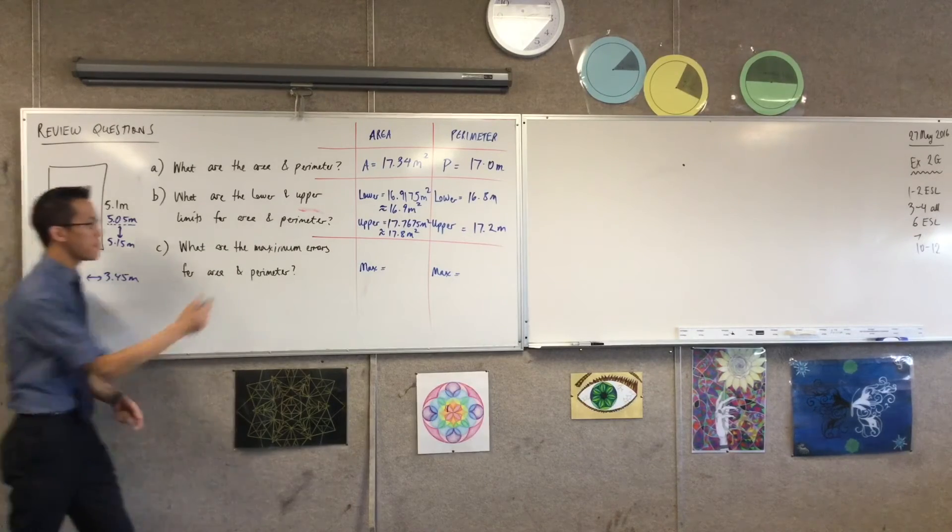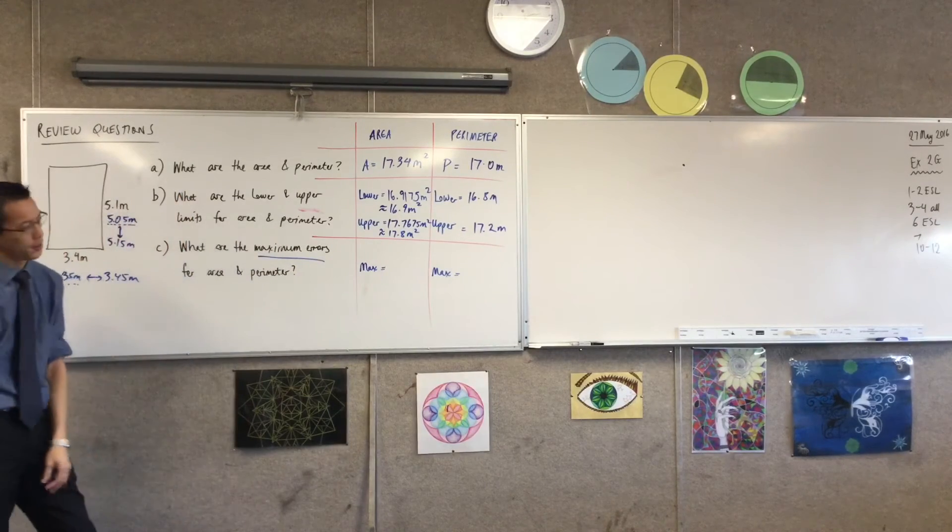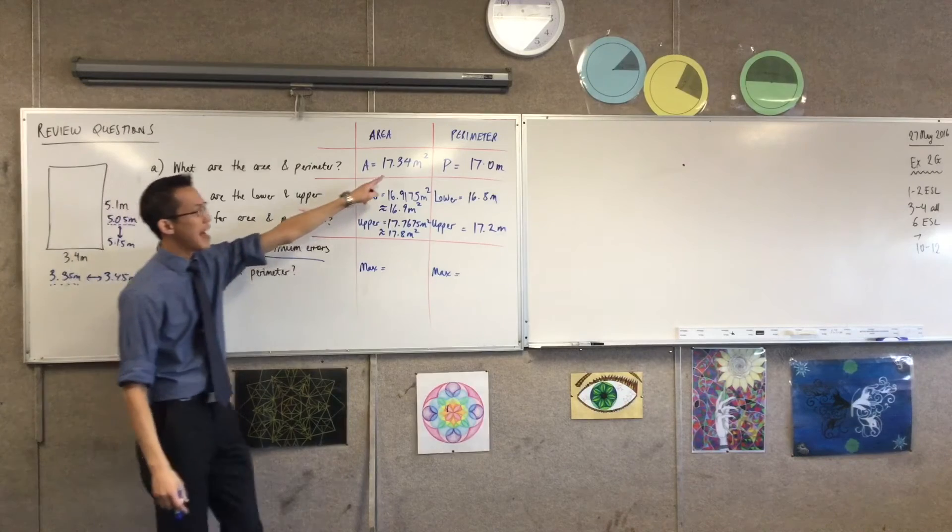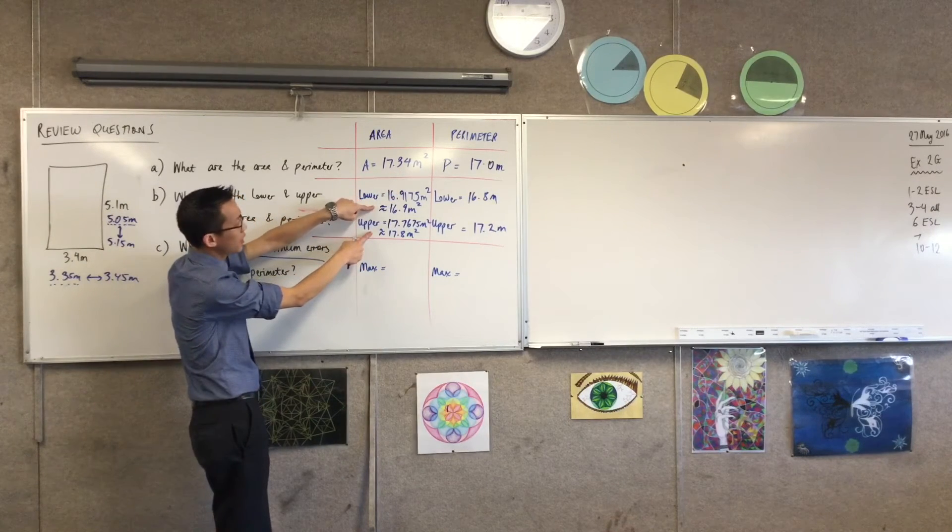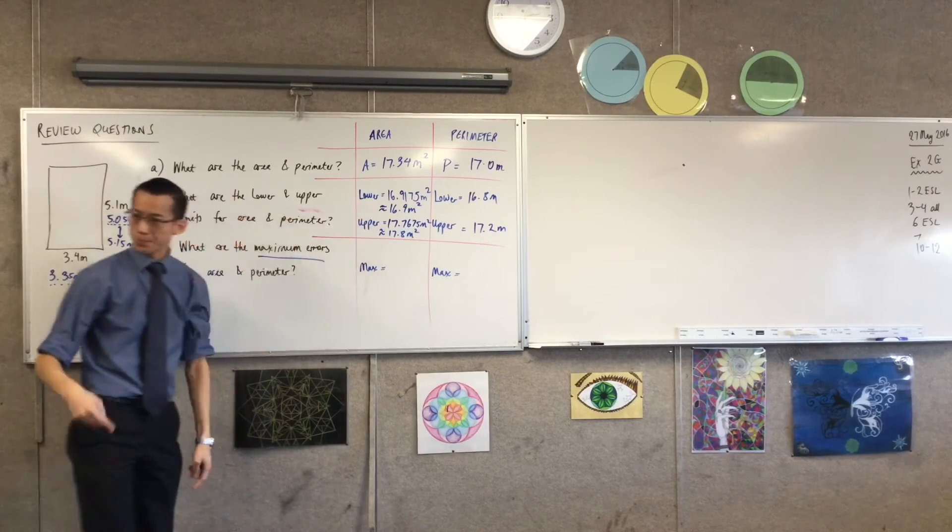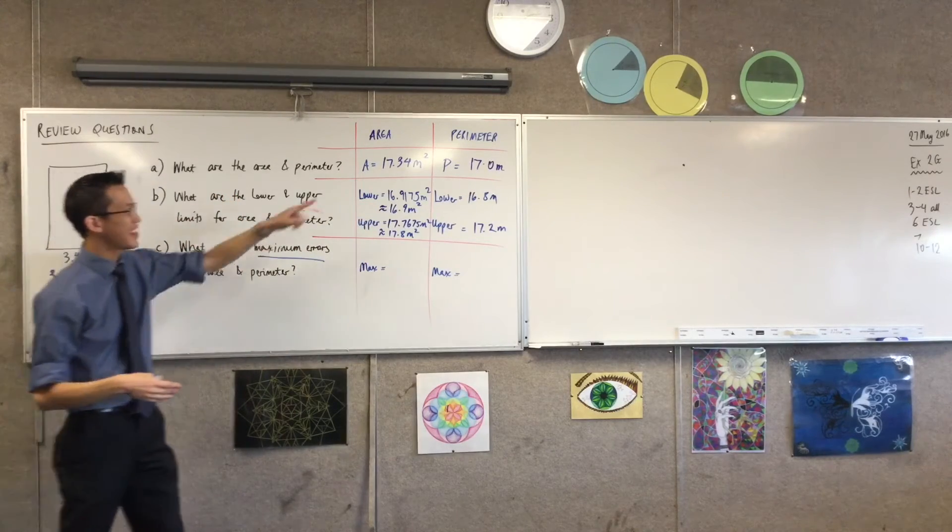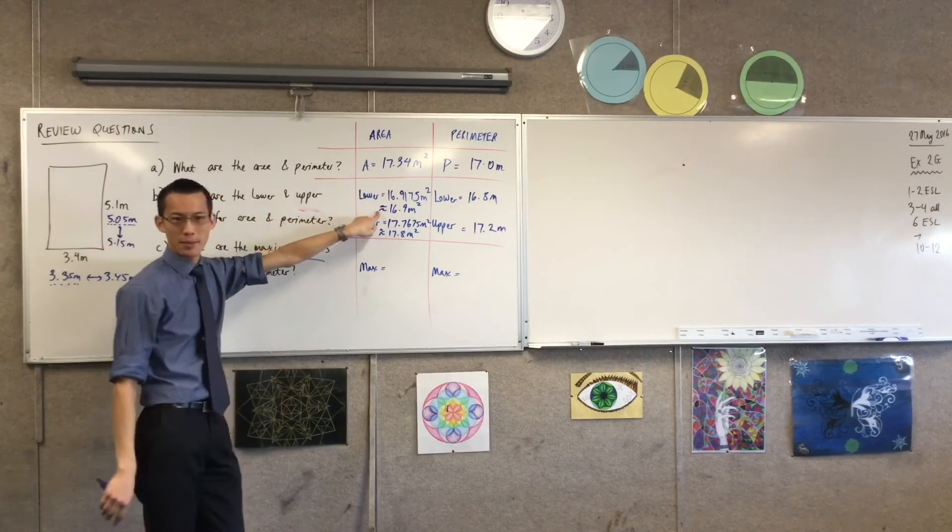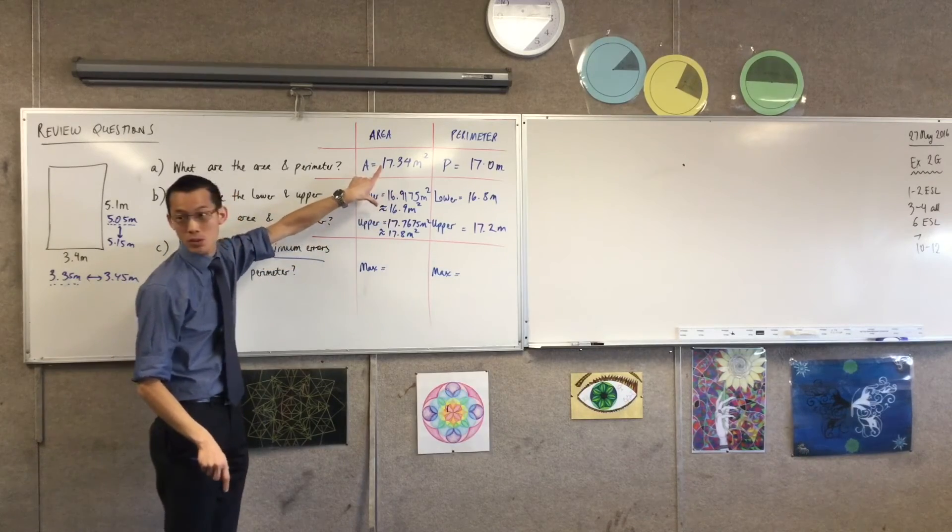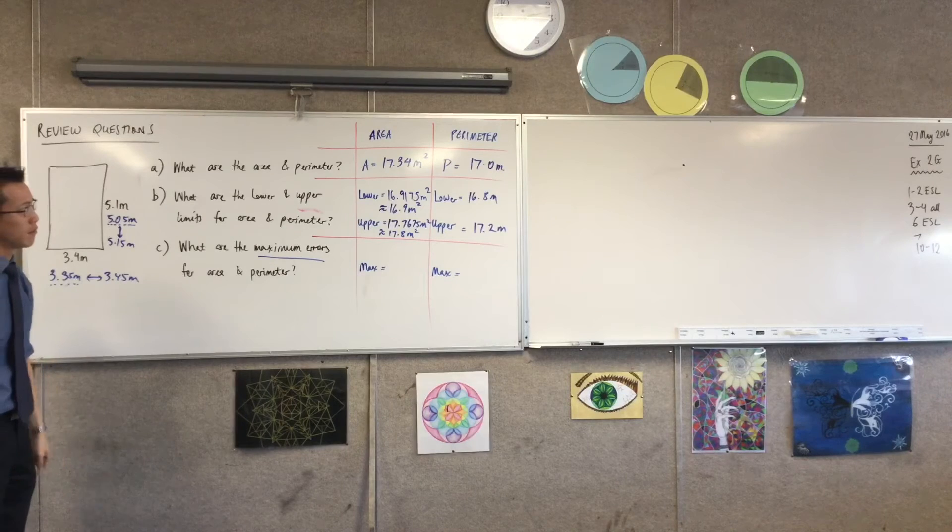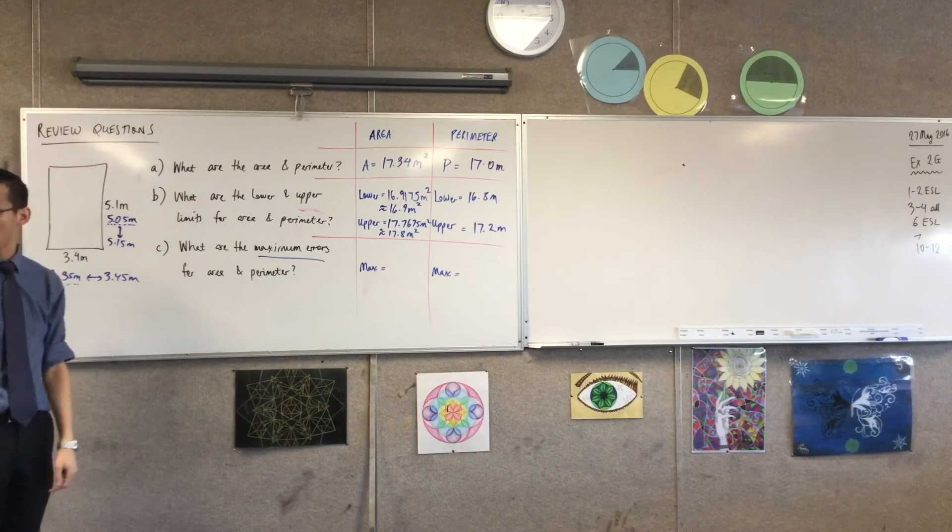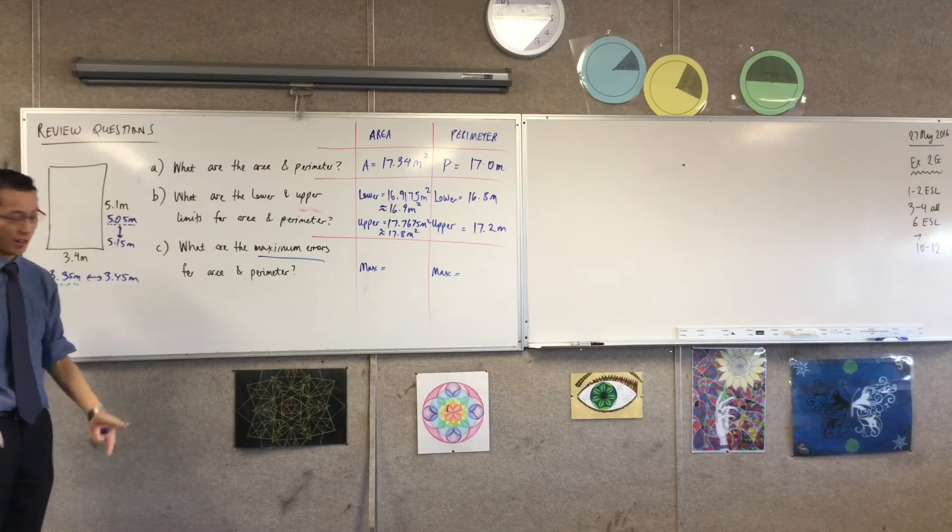Now, the last part. What are the maximum errors for each of them? So when I think about what I actually measured and how far up and down I could be, okay, let's have a look at this. So for example, what's the difference between what I think it is and the lower limit? What's the difference between those two numbers? It looks like 0.44, 0.44 square meters. Yeah, okay, on the money, right? So just keep that in your mind.